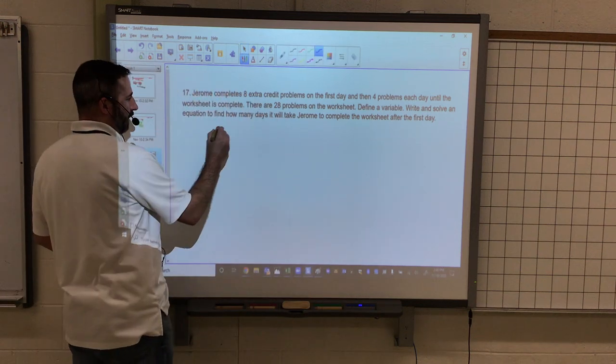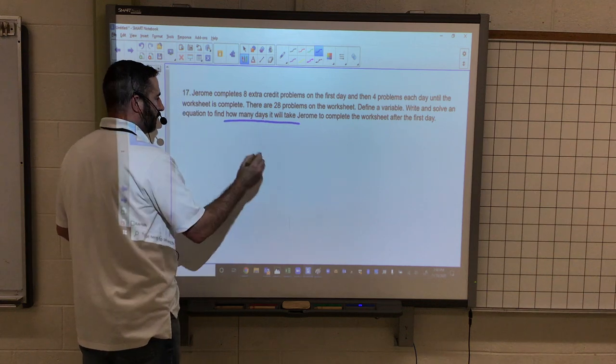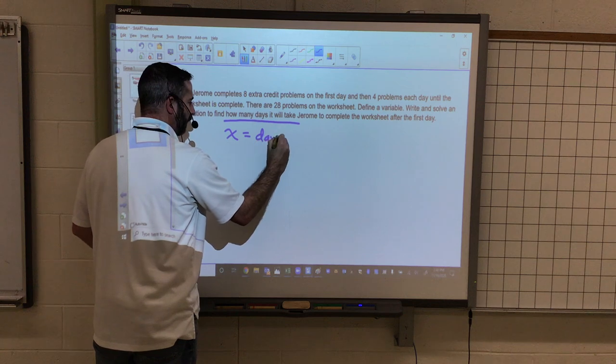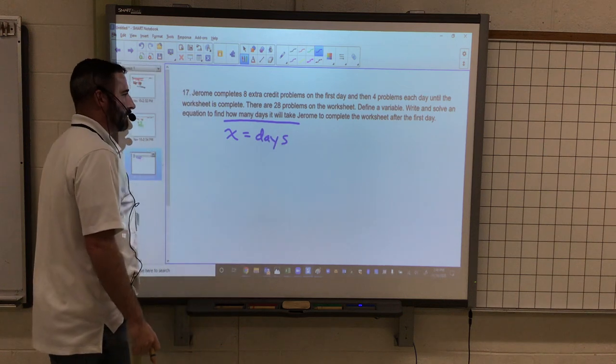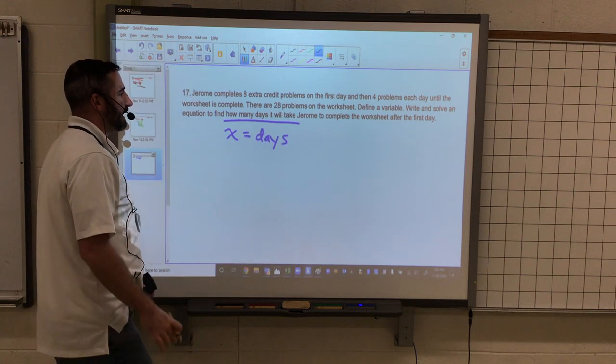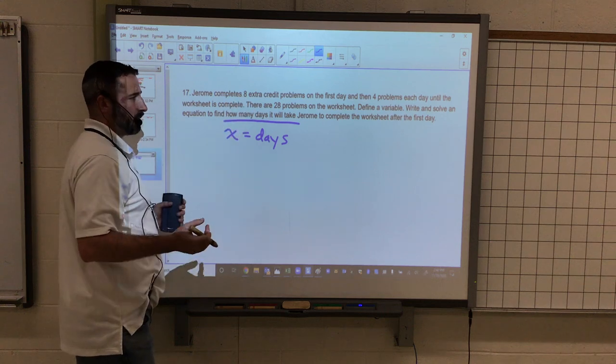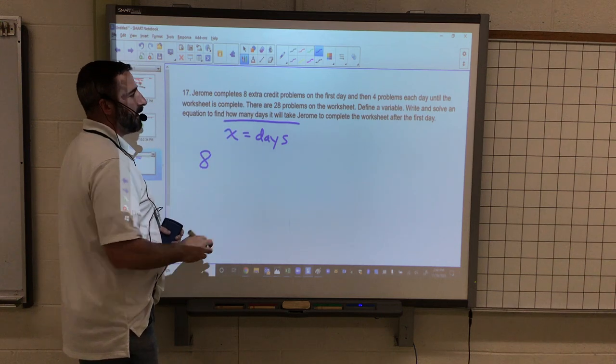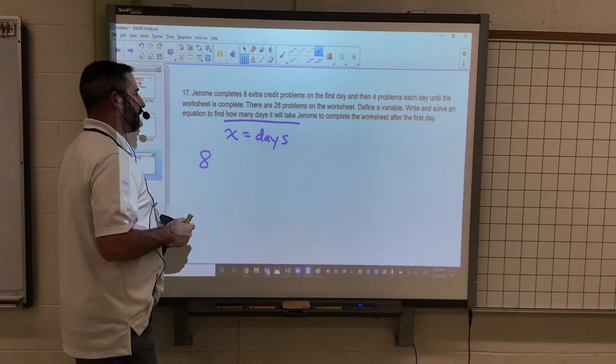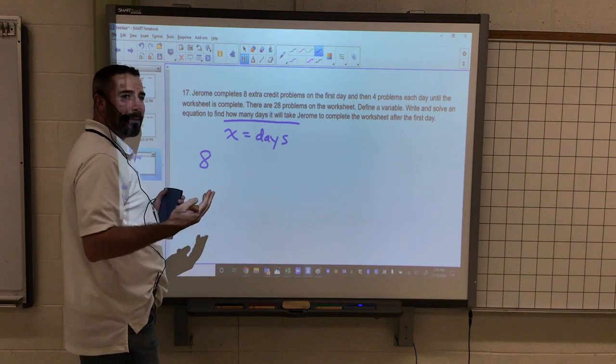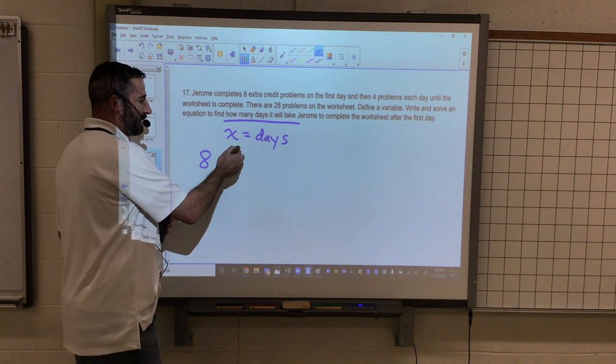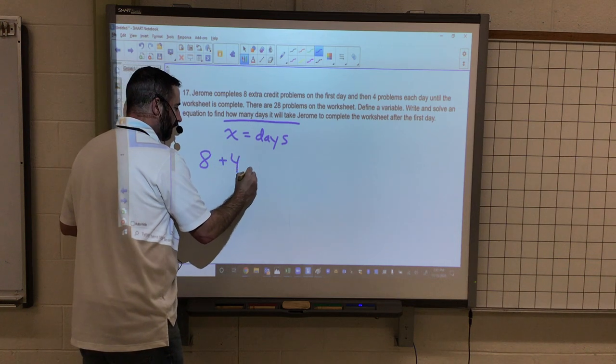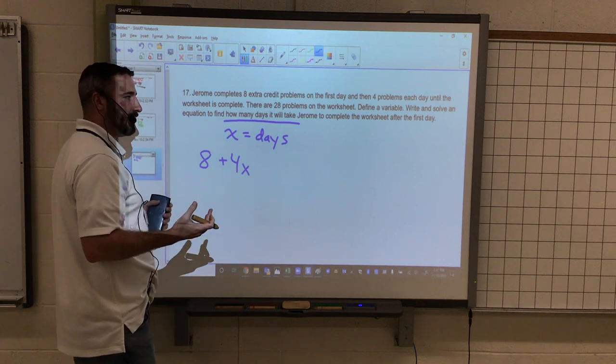So we want to know how many days it will take. I'm going to define my variable: x equals days. He's going to complete 8 extra credit problems on the first day. So we know he completed 8 problems. Then 4 problems each day until the worksheet is complete. We don't know how many days, so we represent that by x. So I'm going to add 4 problems per day, and that depends on how many days we have.